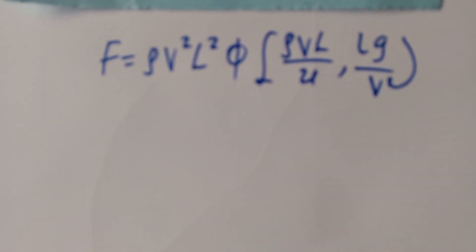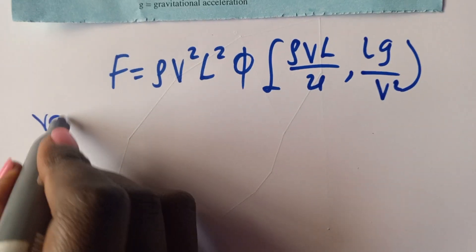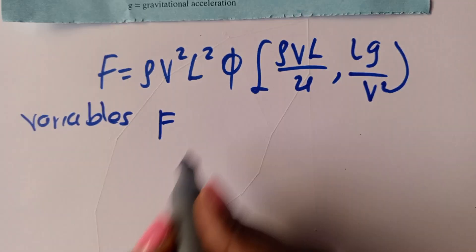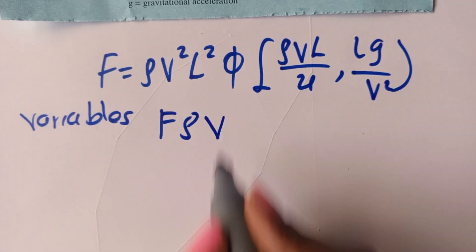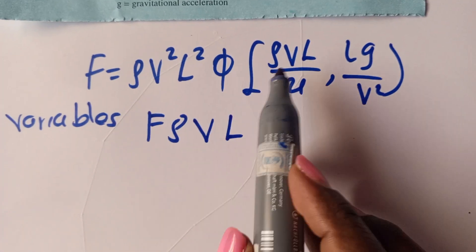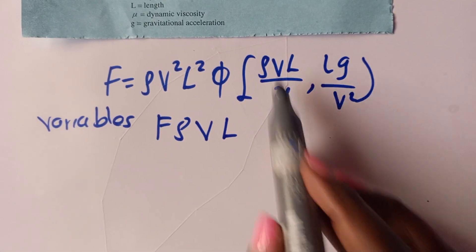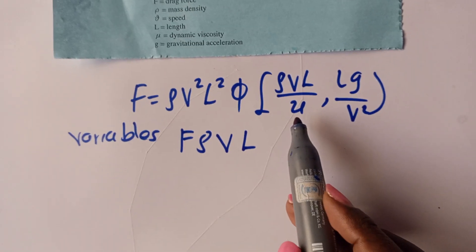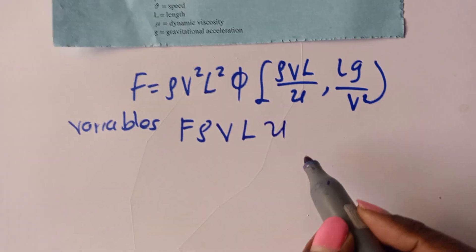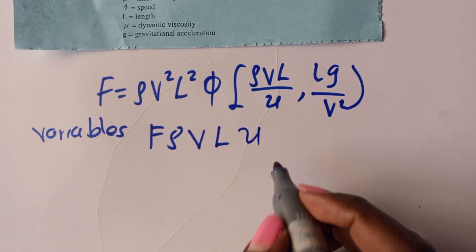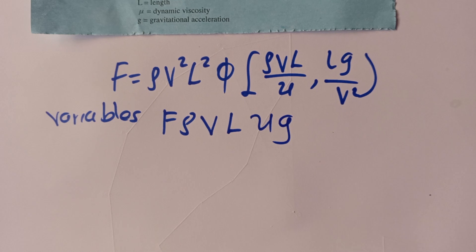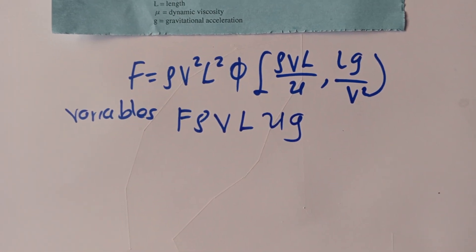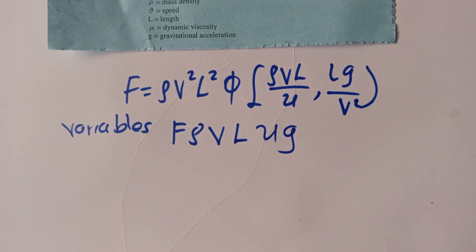The first step is to write all the variables. The variables here are F, rho, V, L — we are not going to repeat those already inside the bracket. The new variables appearing are mu and G. After having all the variables, bring in their dimensions.